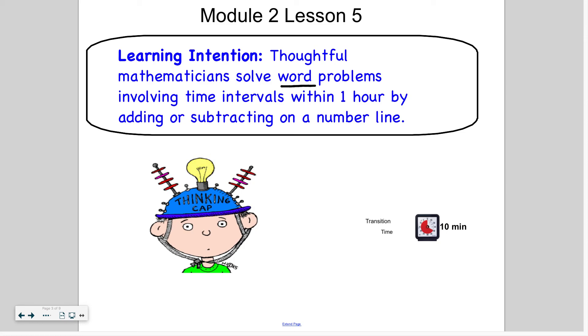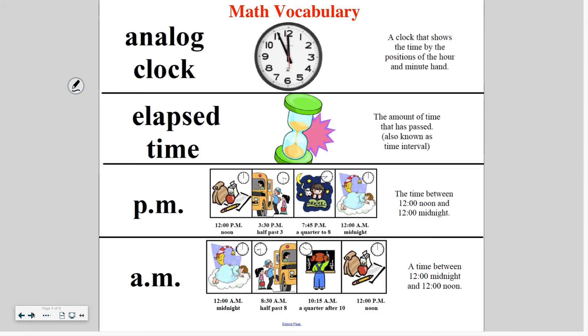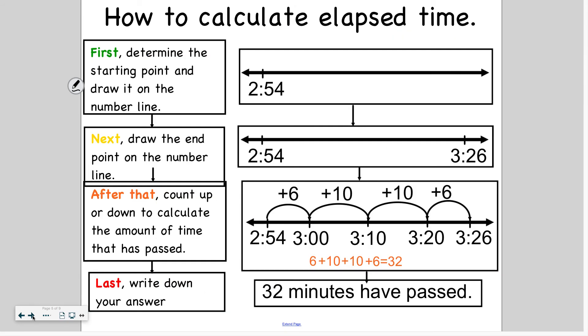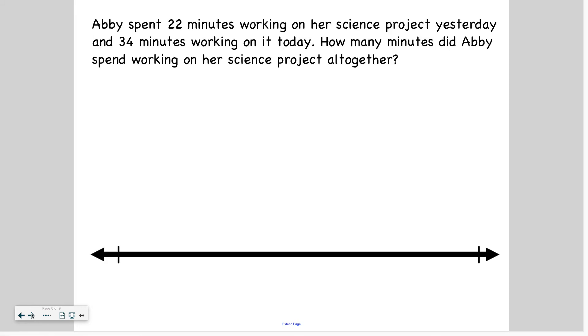So let's get into today's lesson. Thoughtful mathematicians solve word problems involving time intervals within one hour by adding or subtracting on a number line. So we know an analog clock tells the time using the minutes and hour hands. Elapsed time is how much time has passed over a course of time. PM are the afternoon and evening hours from 12 noon to 12 midnight. And AM are the morning hours between midnight to 12 noon. So you can pause and reread this flow map on how to calculate elapsed time.